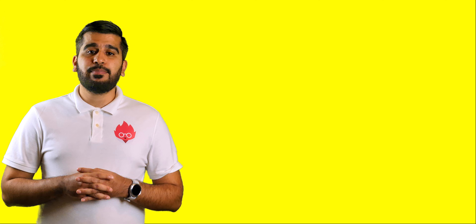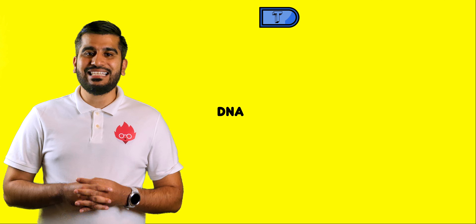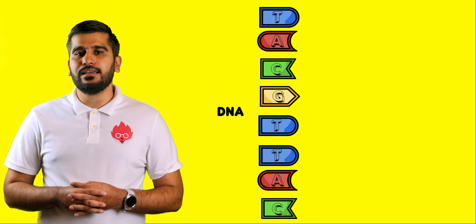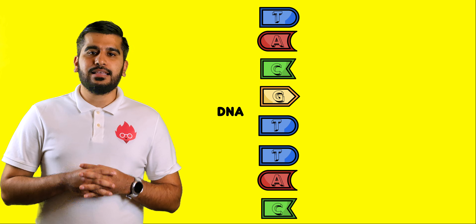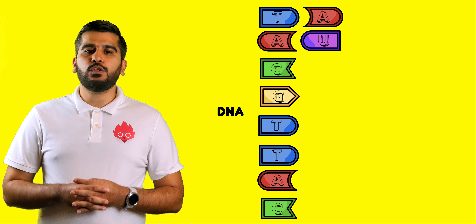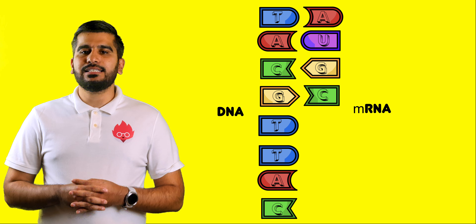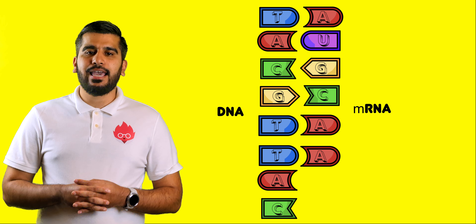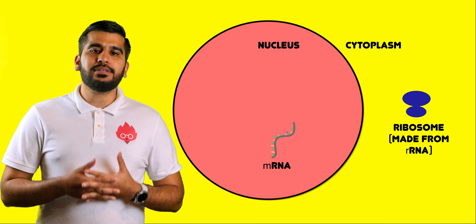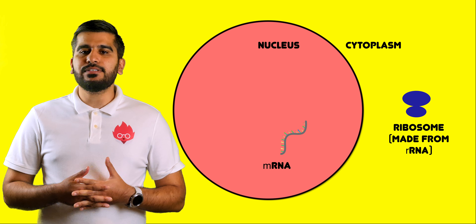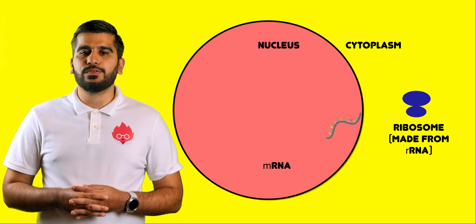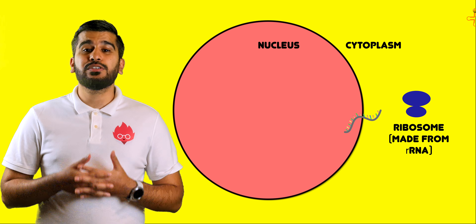So if the bases on the DNA template strand are T, A, C, G, T, T, A, C, then the mRNA strand produced will be A, U, G, C, A, A, U, G. The newly formed mRNA leaves the nucleus and moves to the cytoplasm to bind to ribosomes, which concludes transcription.